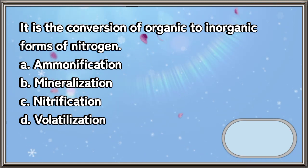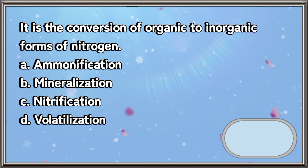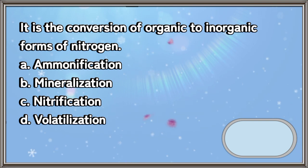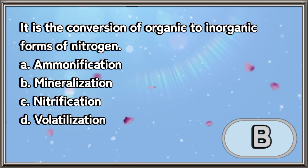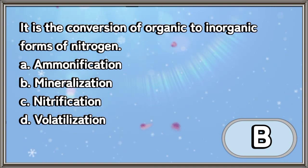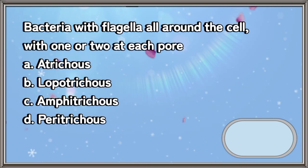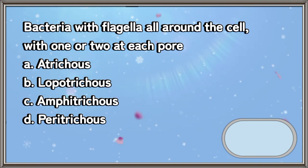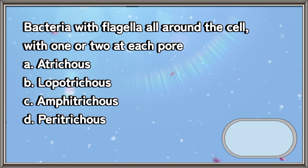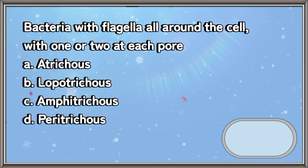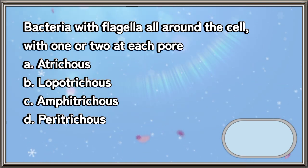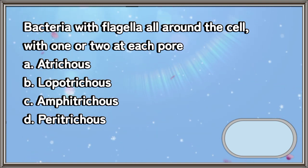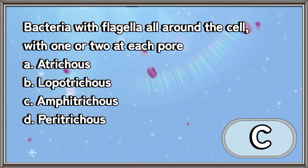It is the conversion of organic to inorganic forms of nitrogen: a) ammonification, b) mineralization, c) nitrification, d) volatilization. The answer is letter B. Bacteria with flagella all around the cell with one or two at each pole: a) atrichous, b) lophotrichous, c) amphitrichous, d) peritrichous. The answer is letter C.